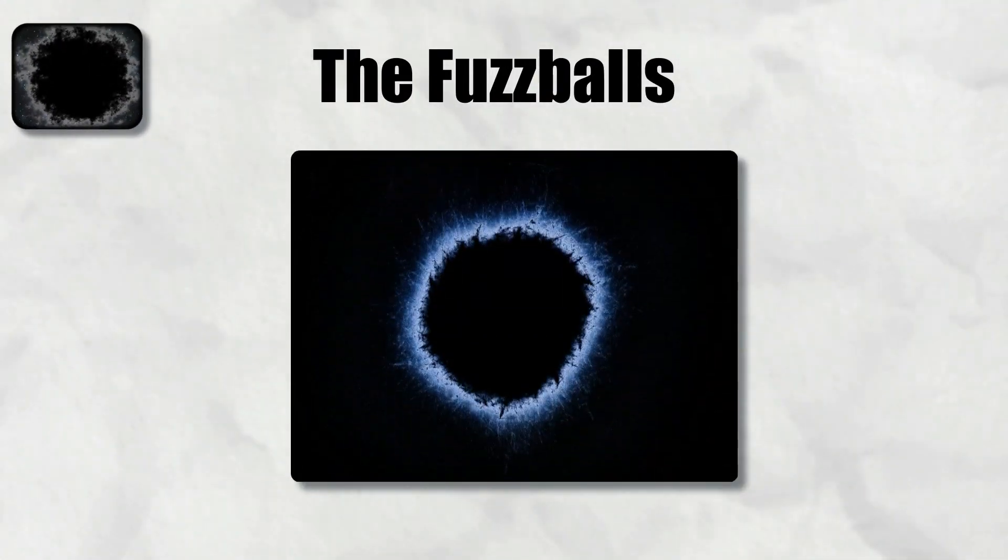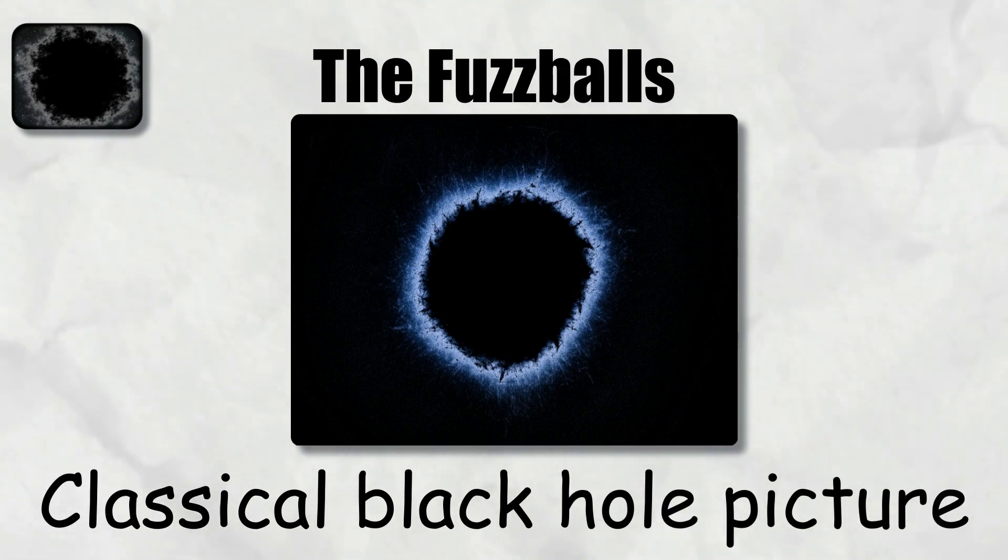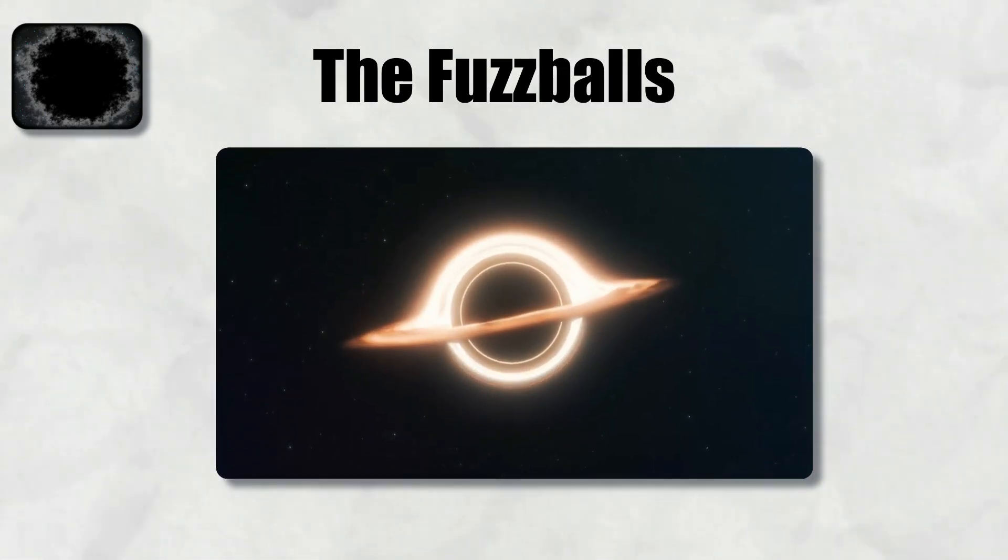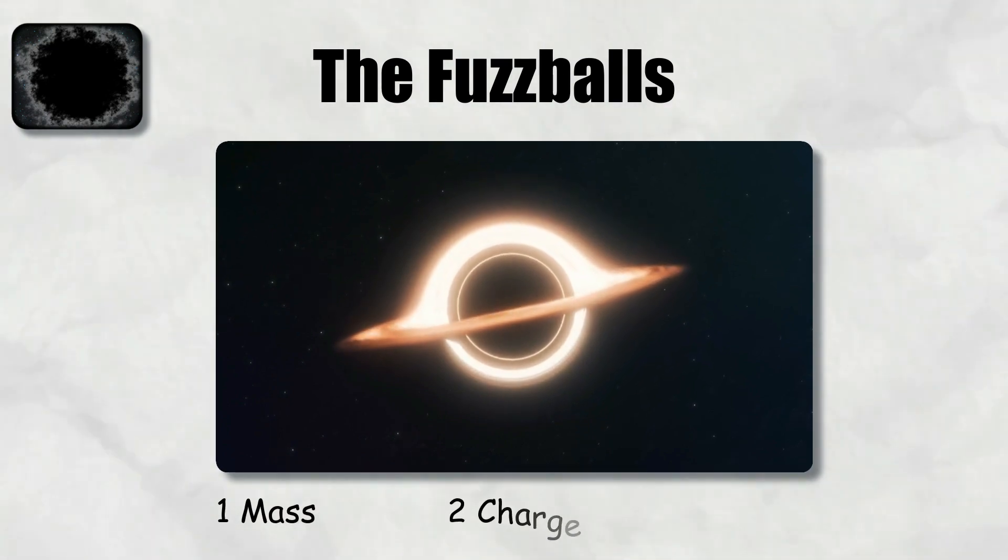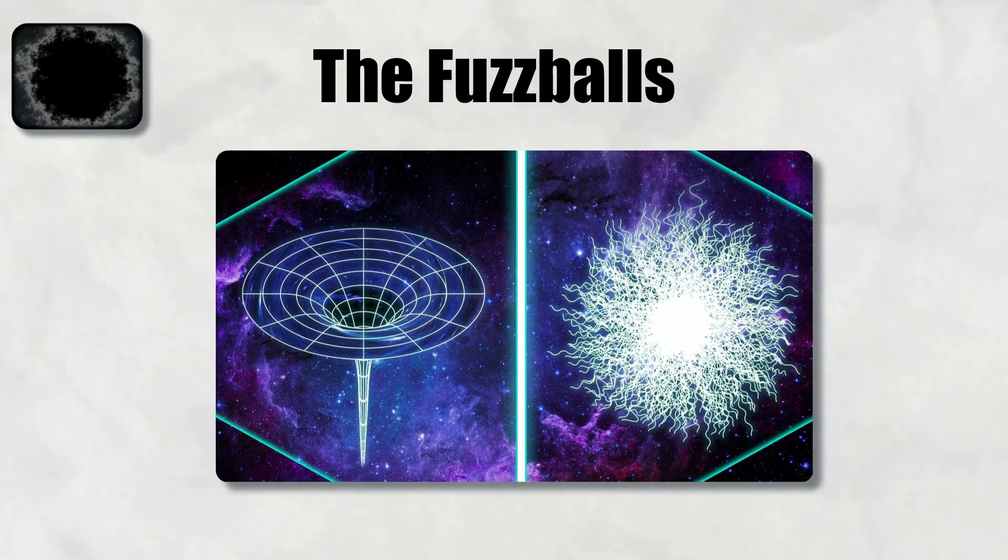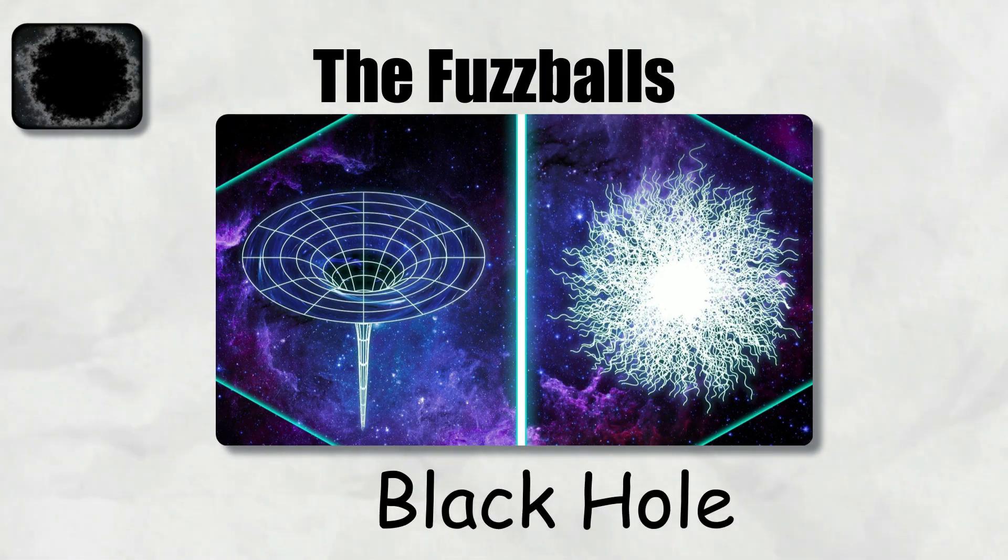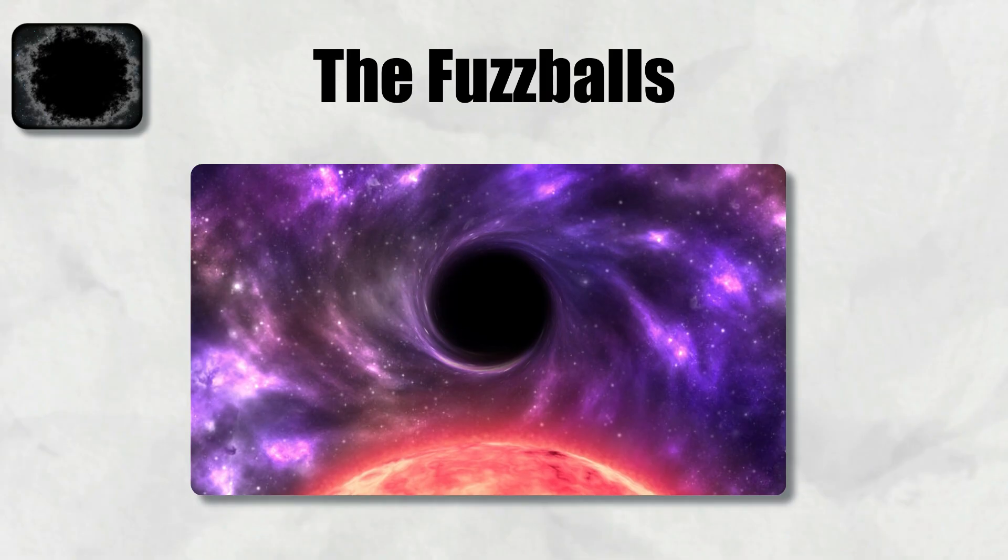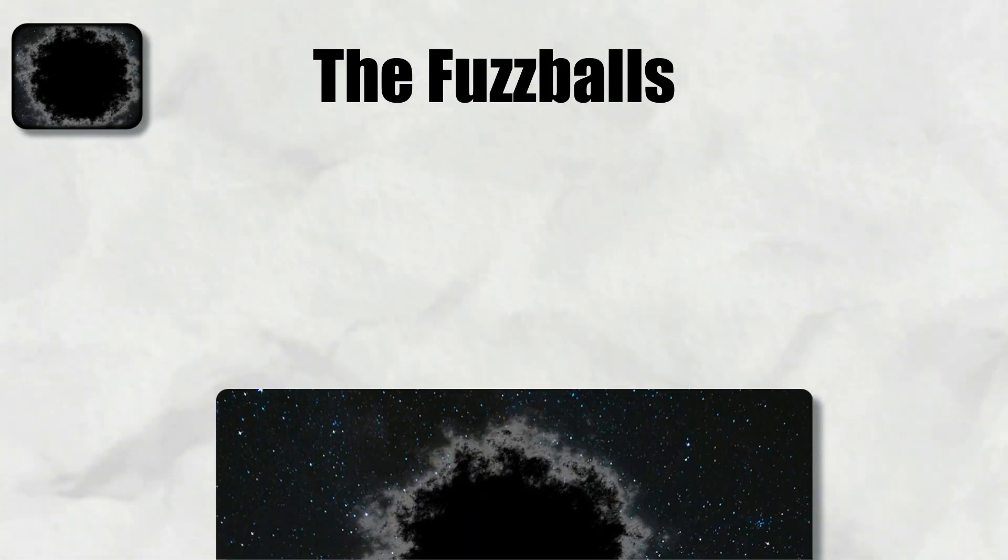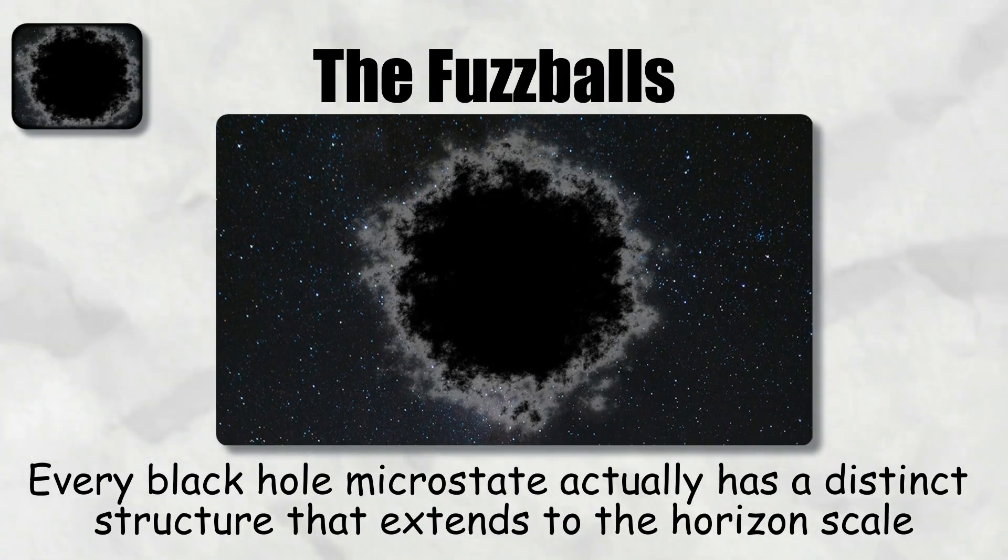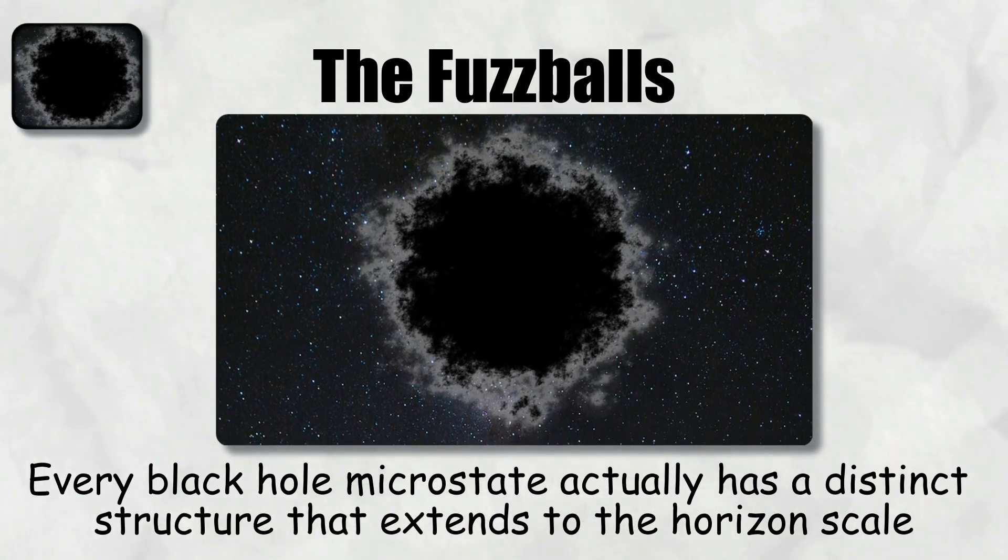Fuzzballs. The fuzzball proposal is a string theory-based alternative to the classical black hole picture. In standard general relativity, a black hole is defined by just a few parameters: mass, charge, and spin. This no-hair property means that all the complex details of the matter that collapse to form the black hole are hidden inside the horizon and lost to outside observers. The fuzzball idea challenges this by saying that every black hole microstate actually has a distinct structure that extends to the horizon scale.